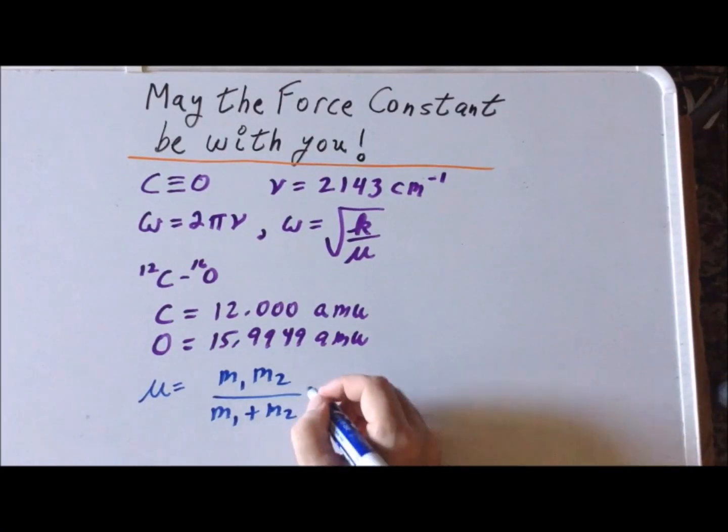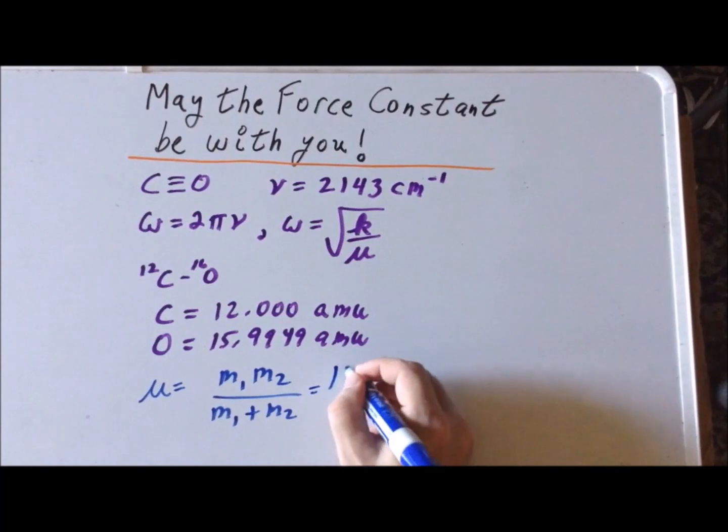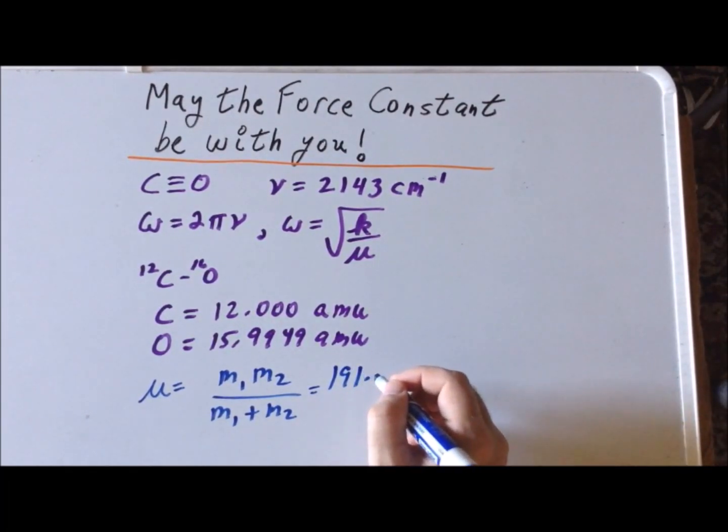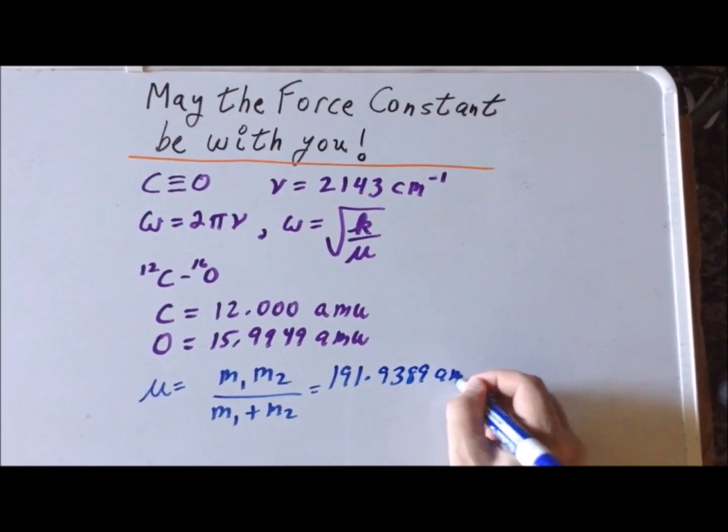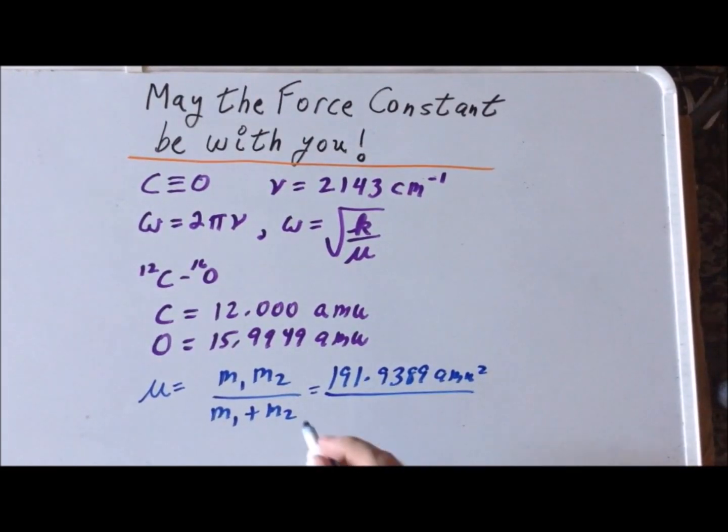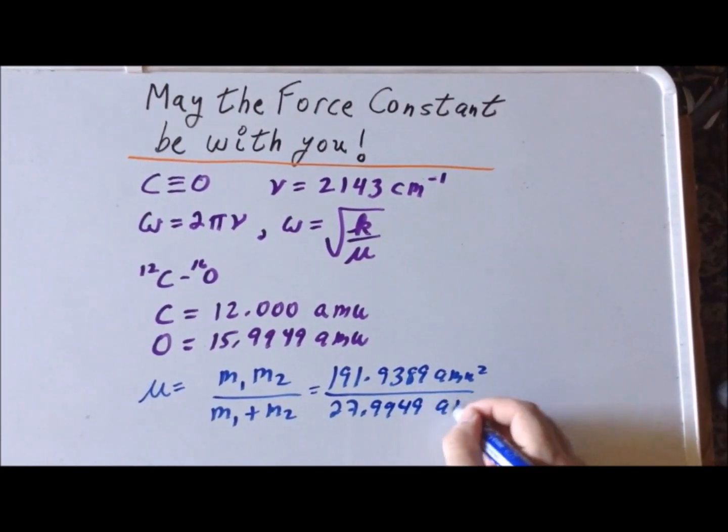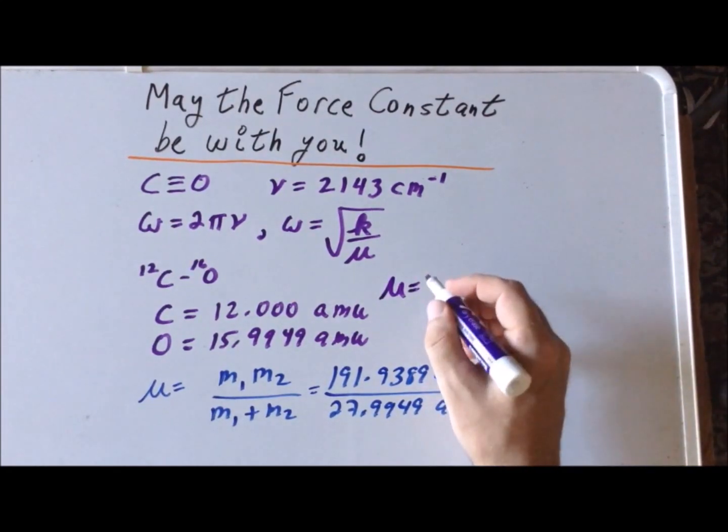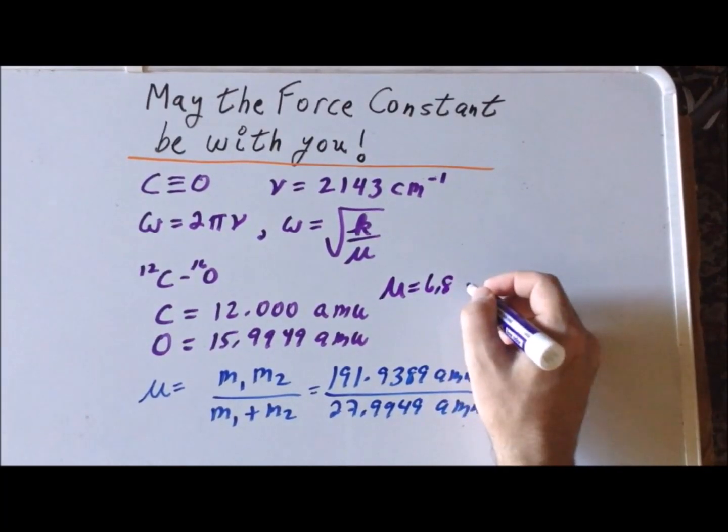We find that the mass of carbon is exactly 12.000 atomic mass units, and the mass of oxygen-16 is 15.9949 amu. It is helpful to first find the reduced mass in terms of amu so that we only need to convert to kilograms one time. We get 191.9389 amu squared in the numerator and 27.9949 amu in the denominator, which equals 6.856 amu.